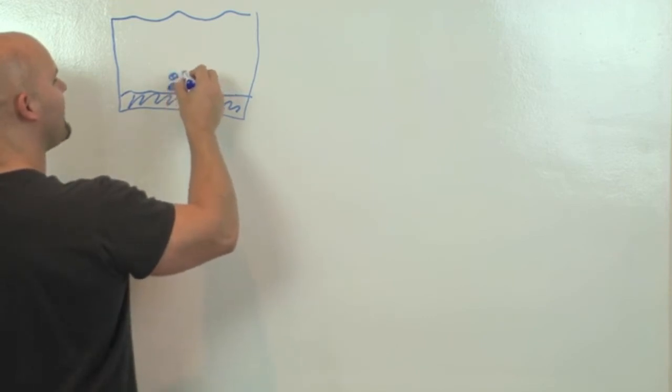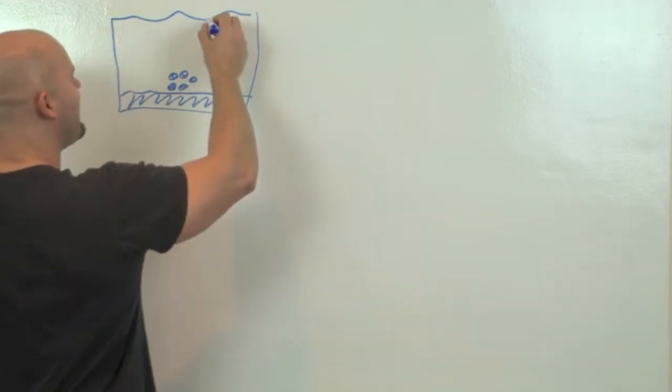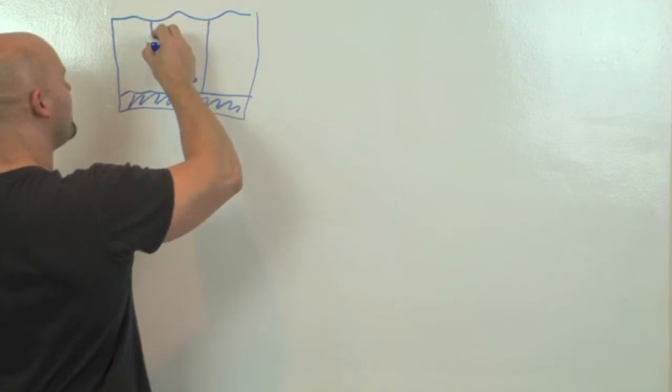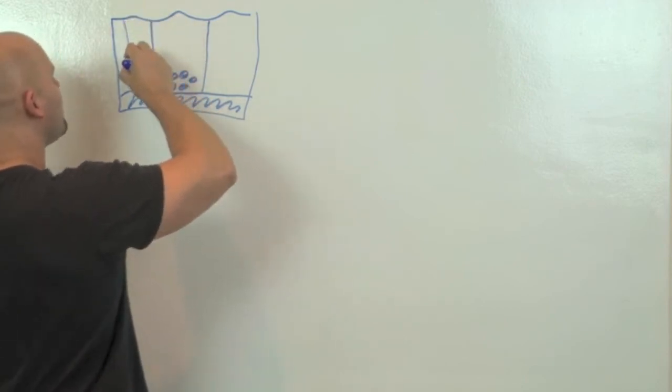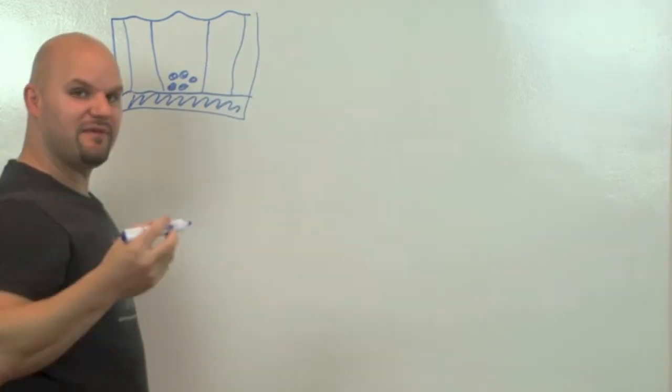So little fat cells all in here like this. Now what happens with women is they have collagen fibers that run essentially vertically through the structure just like this. And because of that,